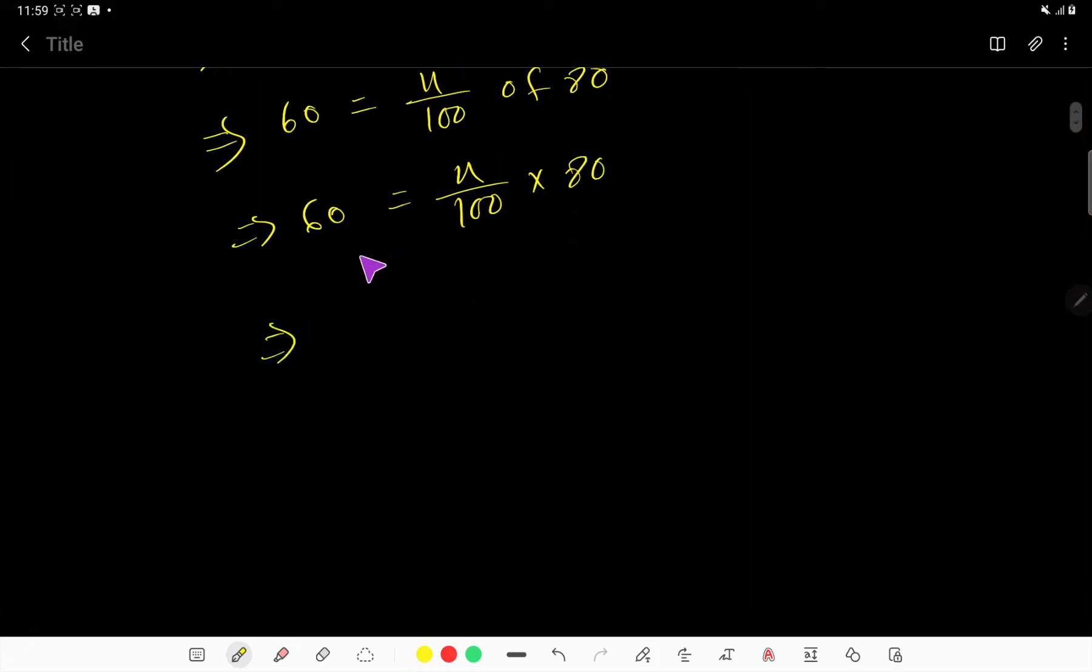The zeros cancel each other, so we're getting X over 10 times 8, and here 60. You can also reduce - if you divide 10 by 2, you get 5, and if you divide 8 by 2, you get 4. So you're getting 4X divided by 5 equal to 60.